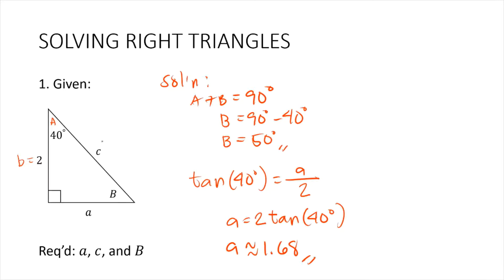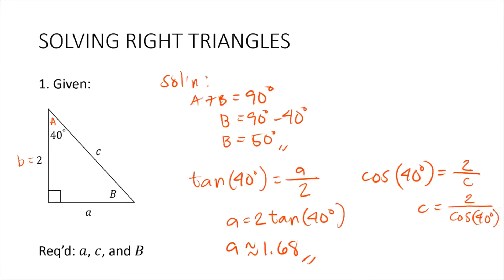Lastly, let's solve for the hypotenuse C. We use another trig function based on angle A. Relative to angle A, side B is adjacent and C is the hypotenuse. So we use the cosine function: cosine of 40 degrees equals the adjacent side 2 units divided by the hypotenuse C. Isolating C, we get C equals 2 divided by cosine of 40 degrees, which is approximately 2.61 units.